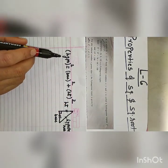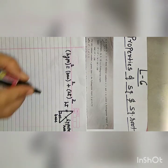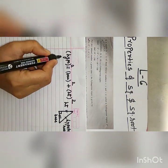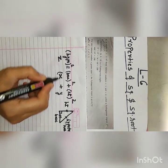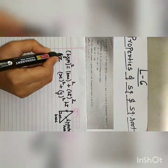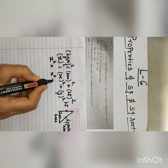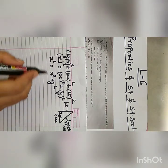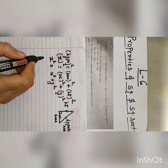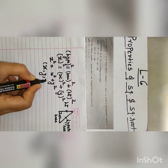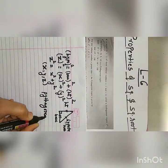So, Pythagoras theorem tells us: square of hypotenuse equals square of base plus square of height. Suppose your hypotenuse is z, base is x, and height is y. So, x square plus y square is equals to z square. This is called the Pythagoras theorem, and x, y and z are called the Pythagorean triplet.